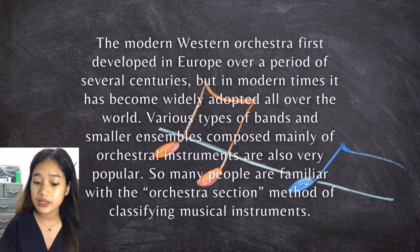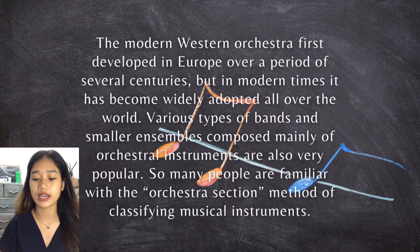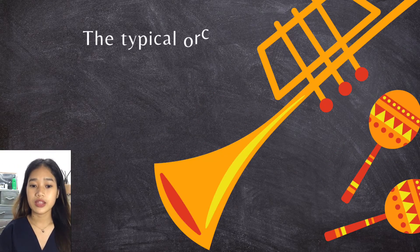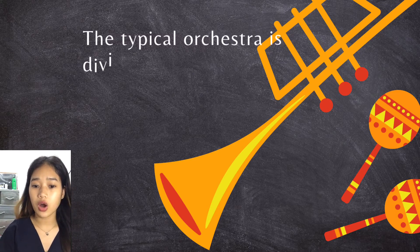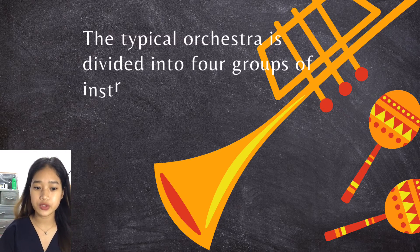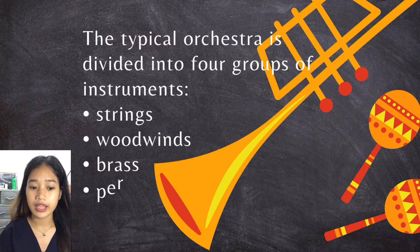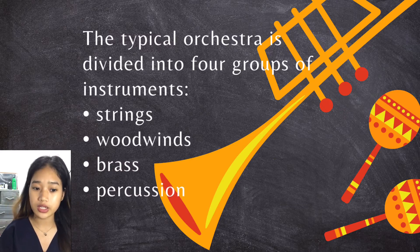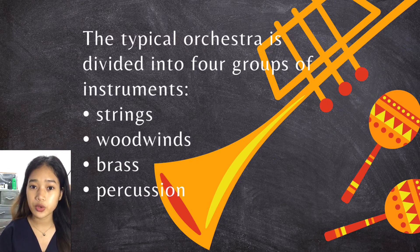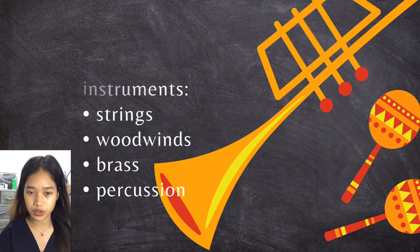Method of classifying musical instruments: the typical orchestra is divided into four groups of instruments — strings, woodwinds, brass, and percussion.